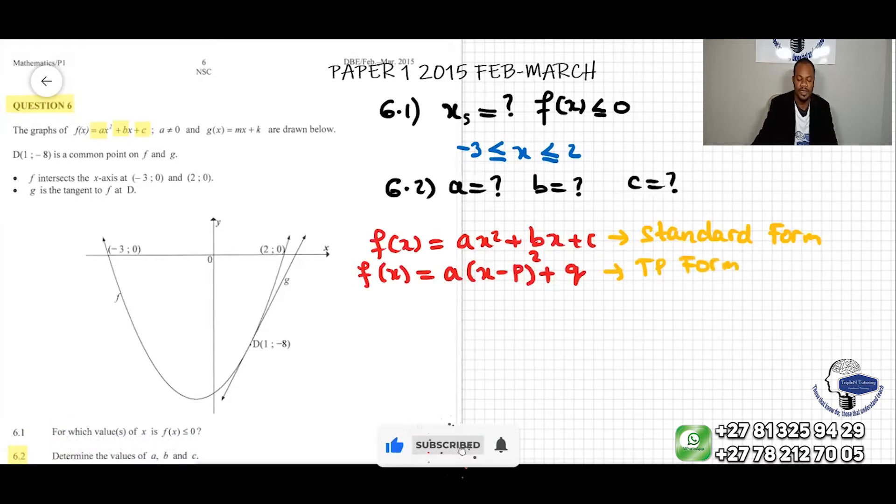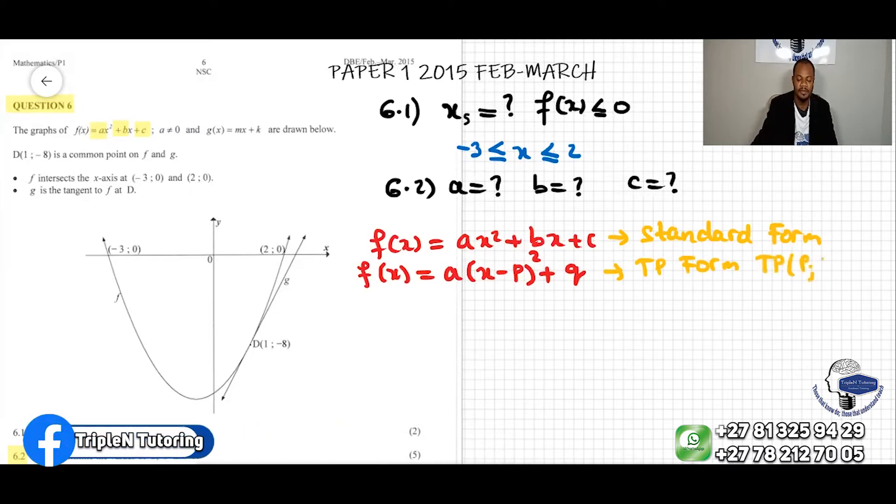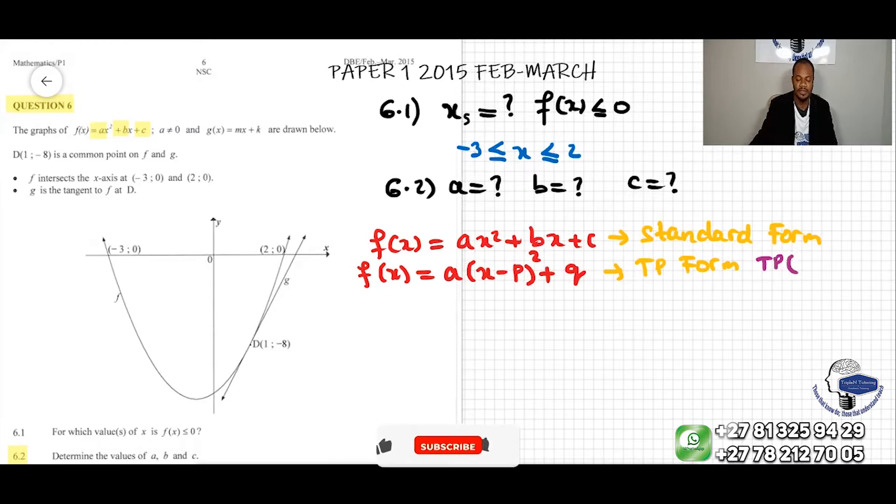This is where P and Q is a turning point. So the turning point here is (P, Q).